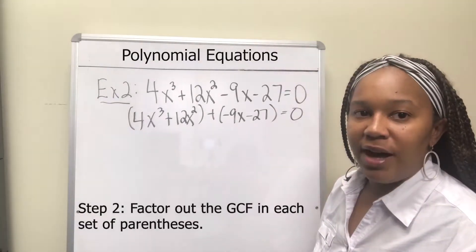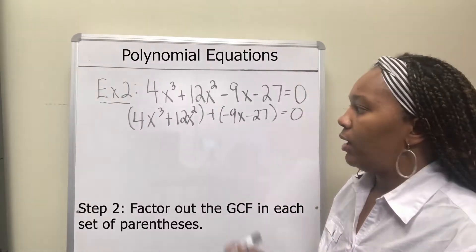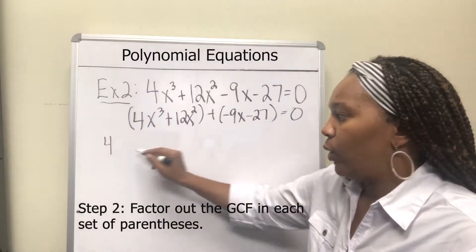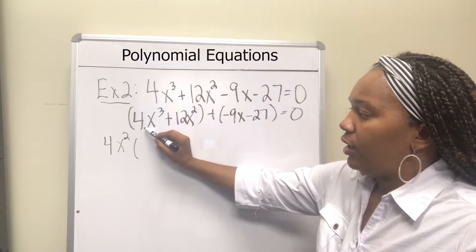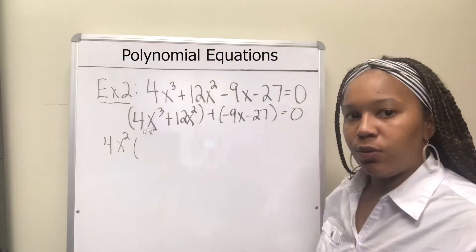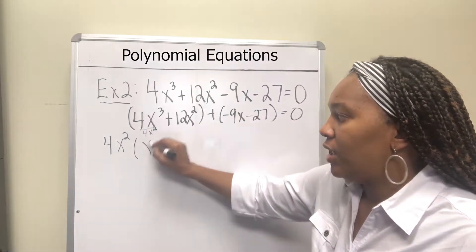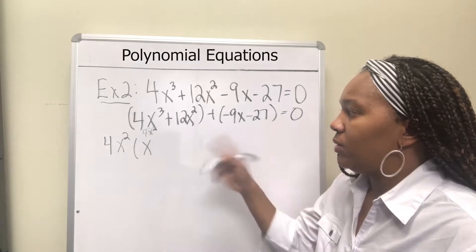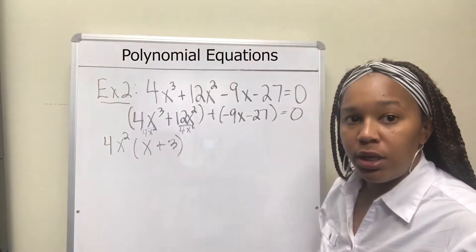Step two: find the GCF in both sets of parentheses. In the first group, both terms share a factor of 4 and x squared, so pull out 4x². Dividing: 4x³ ÷ 4x² = x, and 12x² ÷ 4x² = 3, leaving (x + 3) inside. In the second group, both terms share a negative and a factor of 9, so pull out −9. Dividing out −9 leaves (x + 3) inside as well.